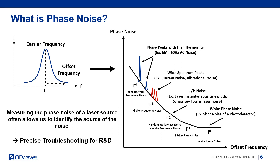Fortunately, there is a better way to measure and present frequency and phase noise: via the noise spectral density. In this way, every noise source could be presented by a different noise slope versus the Fourier frequency, or show up as spurious content.